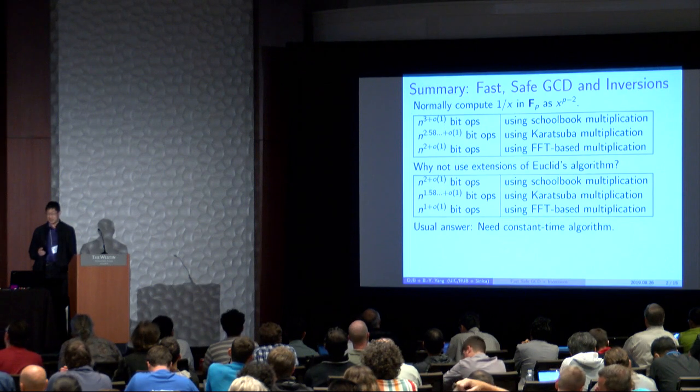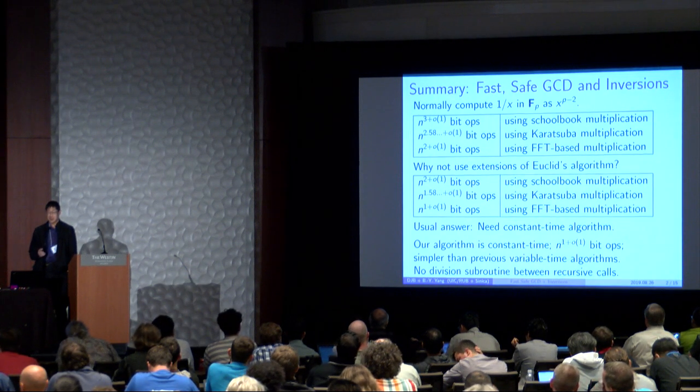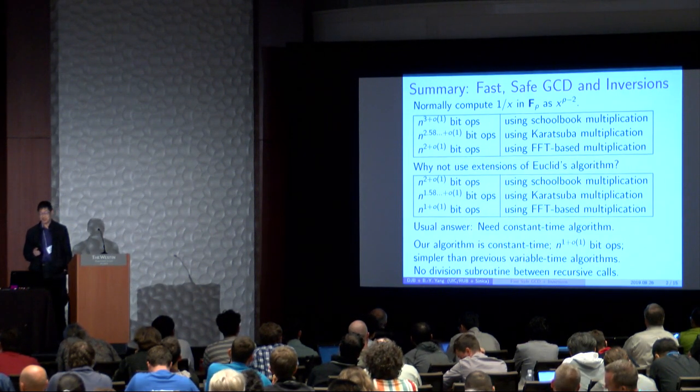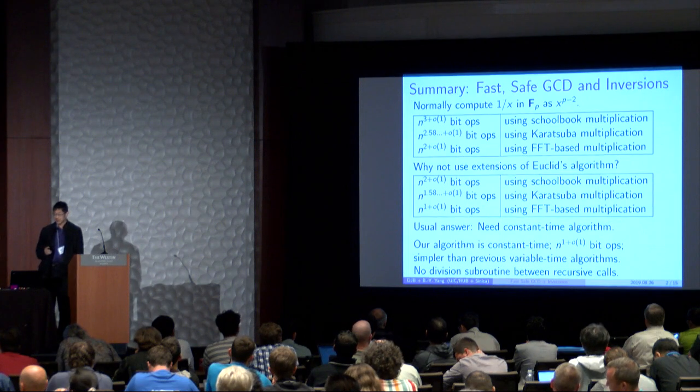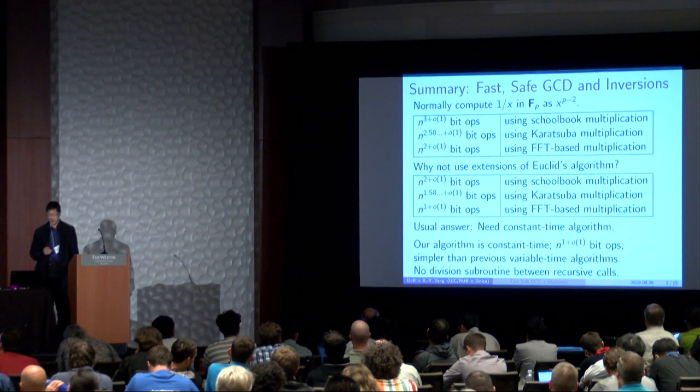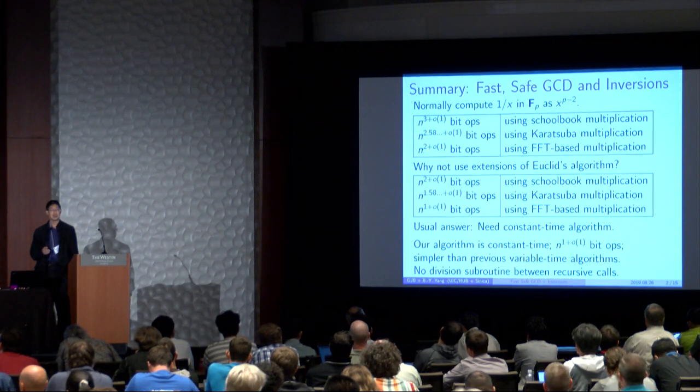Typically, the answer is that we need constant time in our algorithms. So our algorithm is constant time, and it achieves n to the 1 plus small o of 1 bit operations. And it is simpler than previous variable time algorithms.